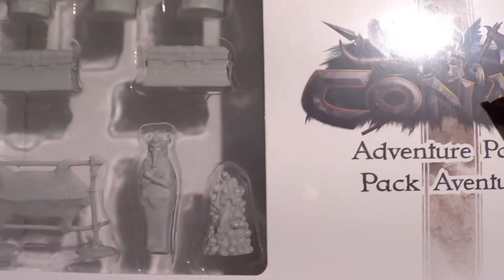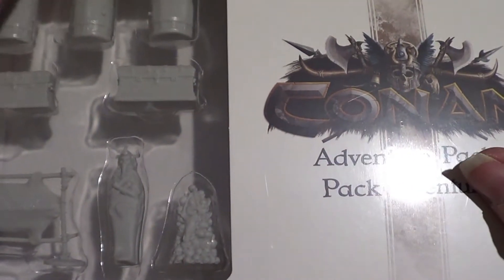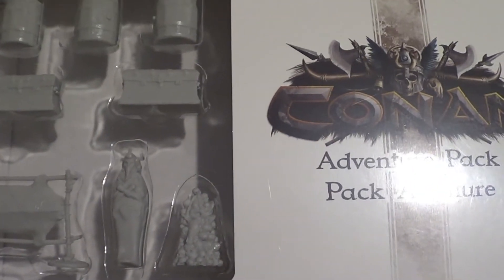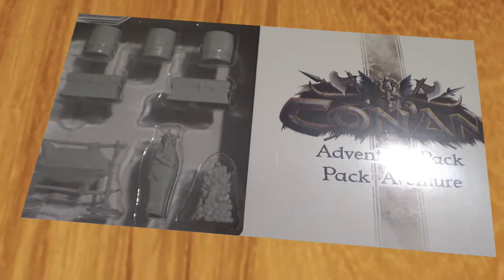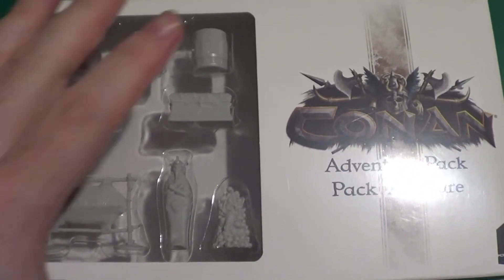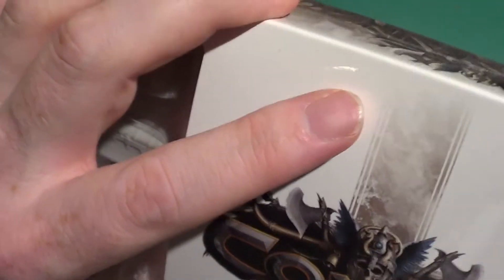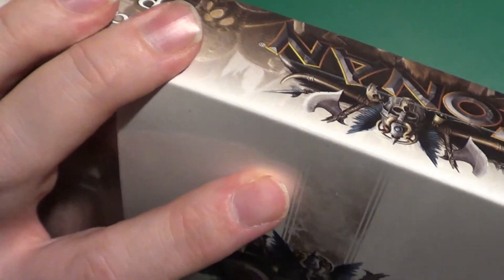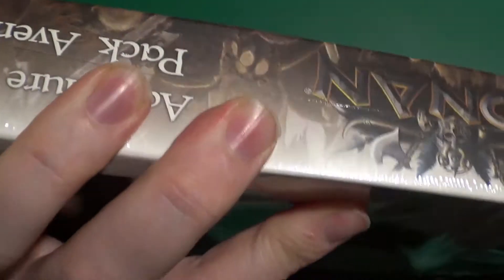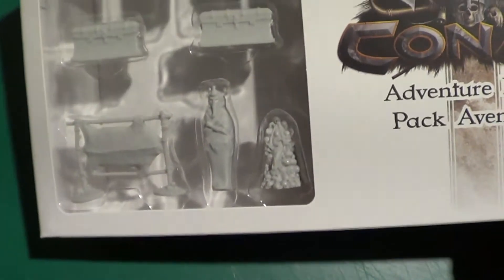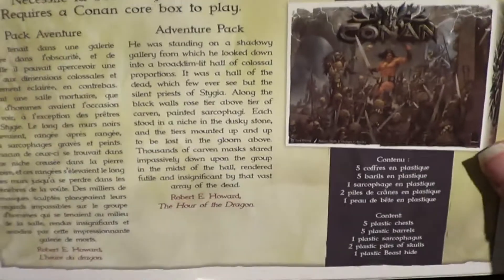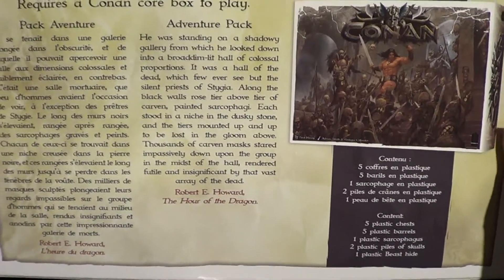The next thing we're going to be opening is the adventure pack, which has more delightful little things in here. Just raise up a little bit. There we are. Get the cellophane off. We can have a look at the back. See what it says on the back. Here we go. And in this we have, I'm sure you can see that, we have five plastic chests, five plastic barrels.